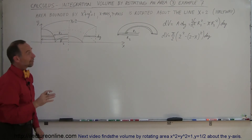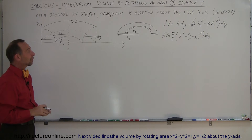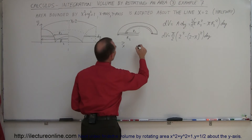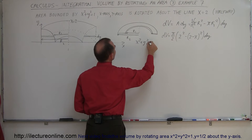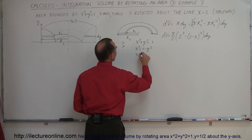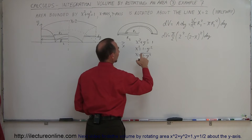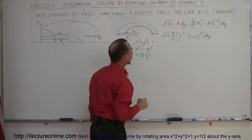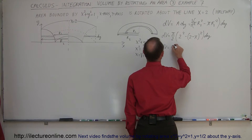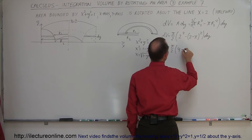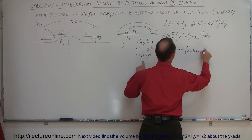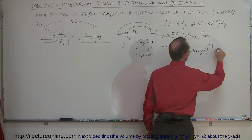We now have an x and a dy, but we want the same variable throughout. So we go back to x squared plus y squared equals 1, giving x squared equals 1 minus y squared, or x equals the square root of 1 minus y squared. Substituting, DV becomes pi over 2 times (4 minus (2 minus the square root of 1 minus y squared) squared) times dy.